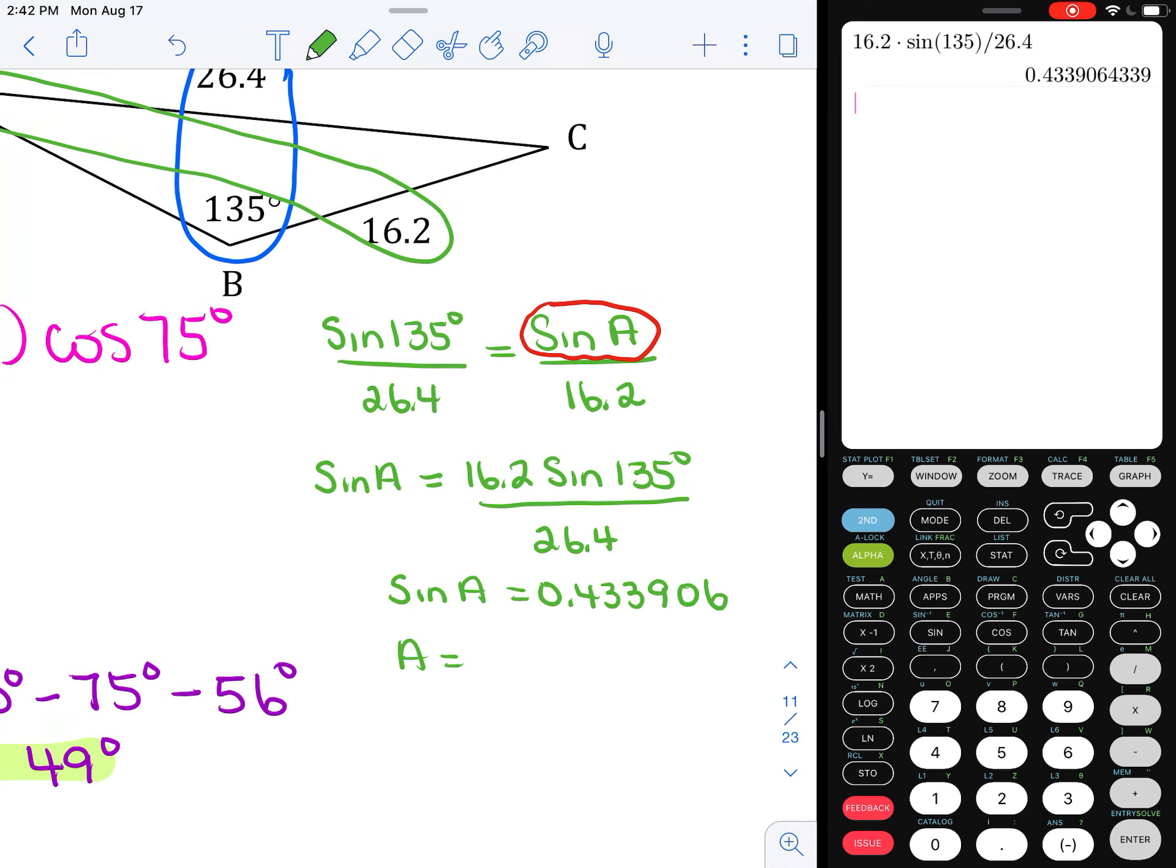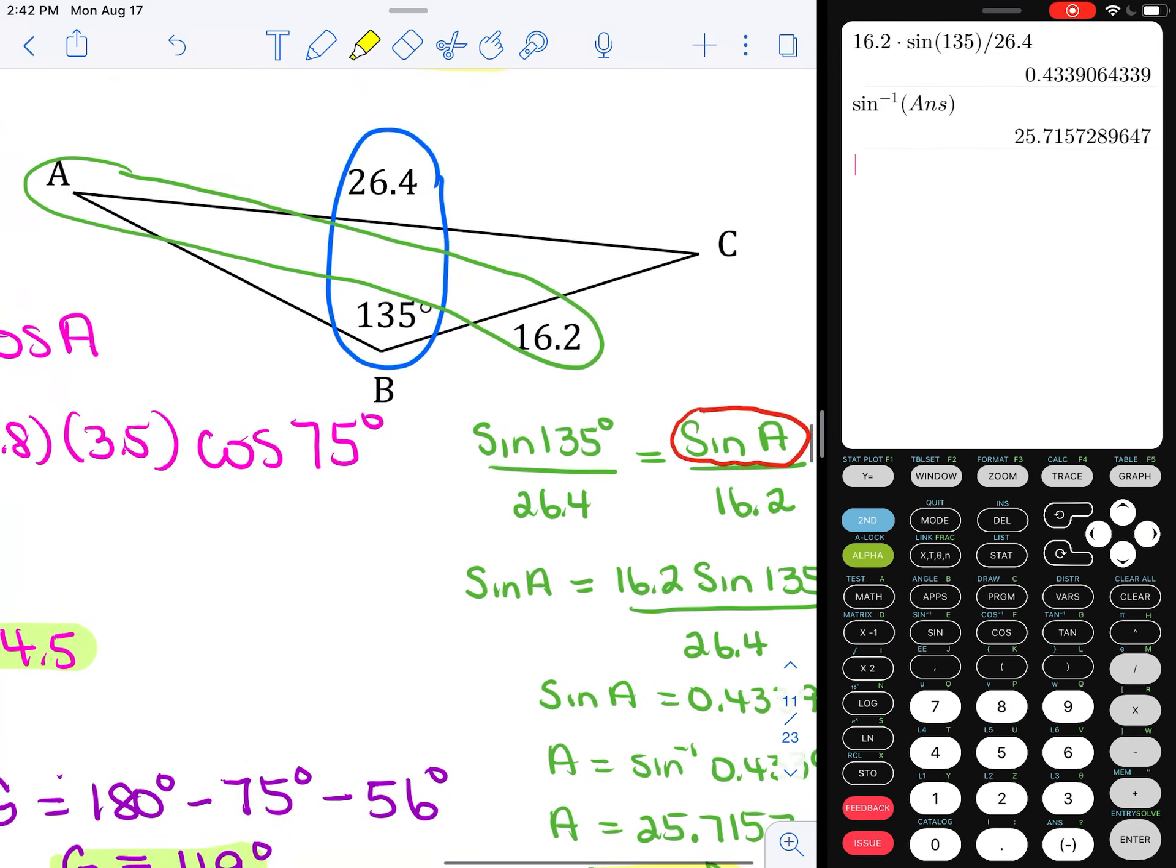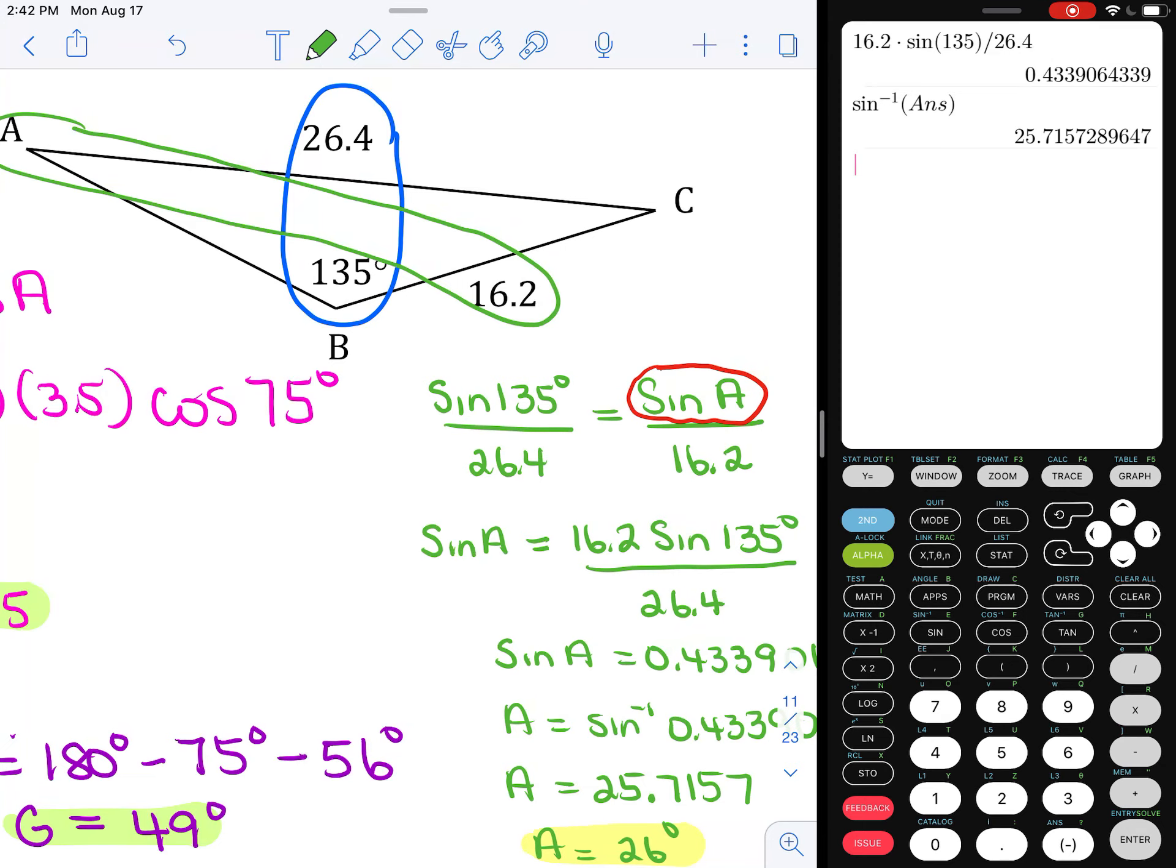And how do you go from sine A to A? You're going to take the inverse sine of that decimal value. So second function sine of that answer. And we're going to get that angle A is 25.7157, which to the nearest whole number we will round to 26 degrees. So I will highlight that. A is 26. Now that you know that A is 26, I'm just going to write that in a different color here. A is about 26.